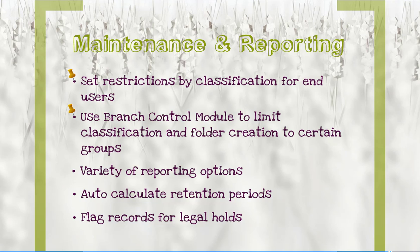For example, everyone has read-only access to the classification scheme, but the records coordinator for each work group or branch can create and work with only their own subset of records or folders. There are also a variety of reporting options. You can run these in the back-end on your classification scheme and your records, using any number of specific parameters. Eloquent Records will also auto-calculate retention periods on your records. When you run your year-end disposition reports, it will pull up all eligible records, and you can print out disposition approval reports for sign-off. You can also flag records for legal holds — such flagged records will be excluded from your disposition reports so you don't accidentally destroy records you shouldn't. The system will track this for you and protect the records.